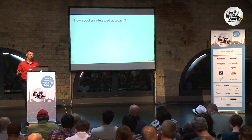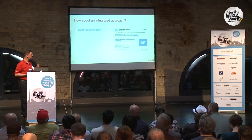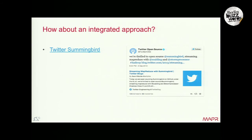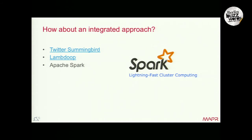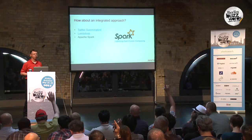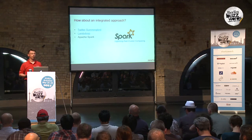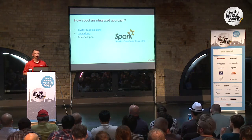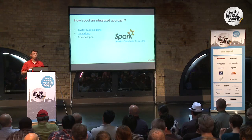Is there anything out there that allows me to implement the Lambda architecture using one framework, one language, one platform? There's Twitter Summingbird, released end of last year, which is a very nice approach. There is Lamdoop, which I believe will soon be open sourced. And there's Spark. I'm going to argue that Apache Spark is probably the best way, based on our experience, to implement the Lambda architecture — because it allows you to pick your language — Scala, Python or whatever — and develop both the batch view and the streaming side using one framework, one paradigm.